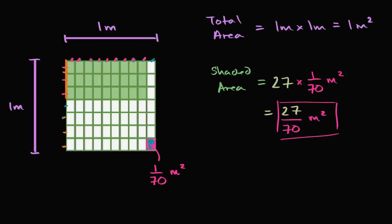Let me do that in a more vibrant color. We have one, two, three, four, five, six, seven equal sections that we've divided this one meter into. And the height of the shaded area is three of them. So this height right over here is three-sevenths of the whole, and the whole is a meter. So it's three-sevenths of a meter.